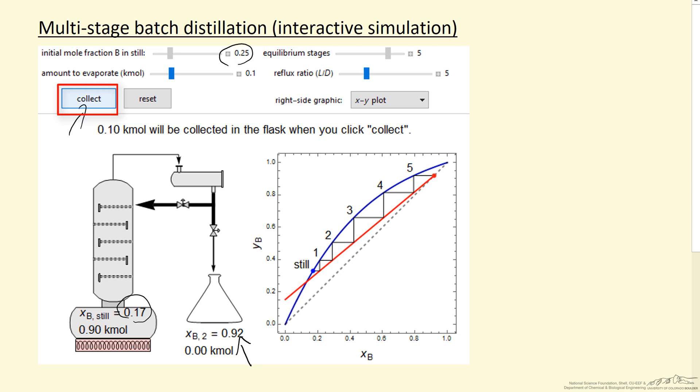Now we can change the amount that evaporates. Instead of evaporating one-tenth of a mole each time, we could make it two-tenths of a mole, for example, 0.25. We can change the number of equilibrium stages, and more equilibrium stages gives us better separation.